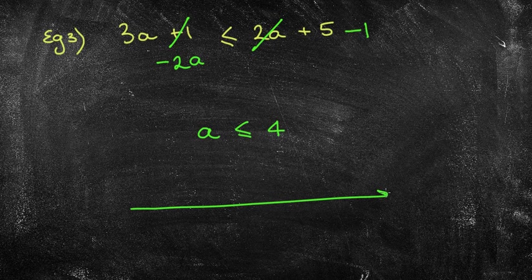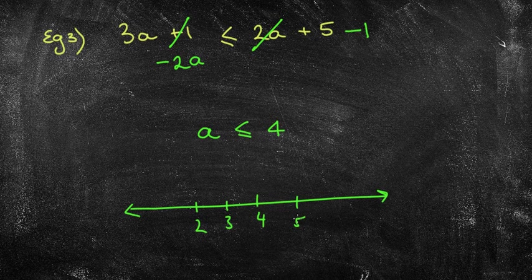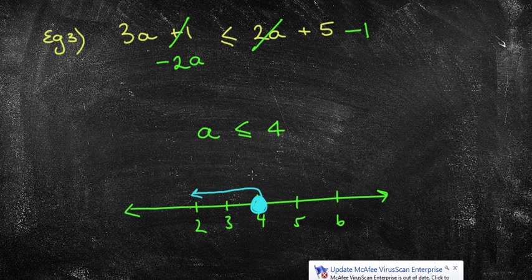So I'm now going to draw my number line. I'm going to put my numbers on there. I'm going to whack 4 in the middle. Then 3 and 2, 5 and 6. I'm going to drop my dot right on the 4. I'm also going to color that dot in because it does say that it's less than or equal to. So I'm now going to point to the left-hand side, which shows that my values of a are less than and equal to that number 4.